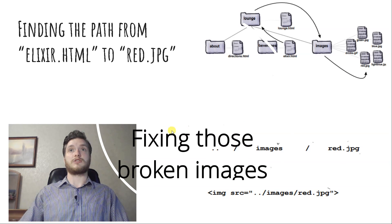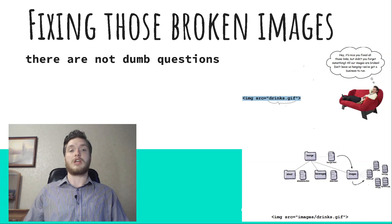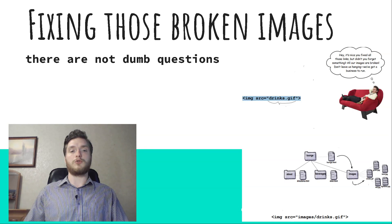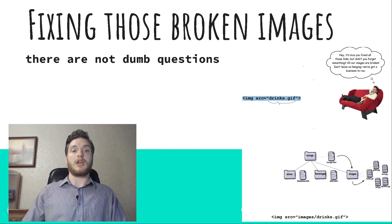Fixing those broken images. You almost got the long site back in working order. All you need to do now is fix those images that aren't displayed. It's nice you fixed all those links, but didn't you forget something? All our images are broken — don't leave us hanging, we've got a business to run! We haven't looked at the image element in detail yet; we will in a couple of chapters. But all you need to know for now is that the image element's src attribute takes a relative path, just like the href attribute. Here's the image element from the long HTML file. Here's the relative path, which tells the browser where the image is located.